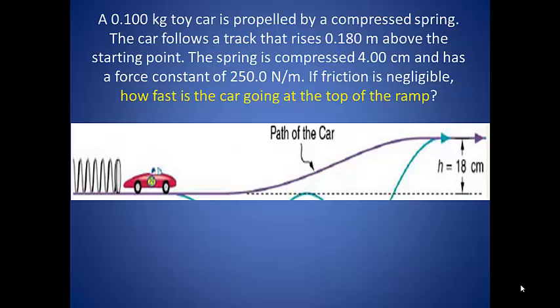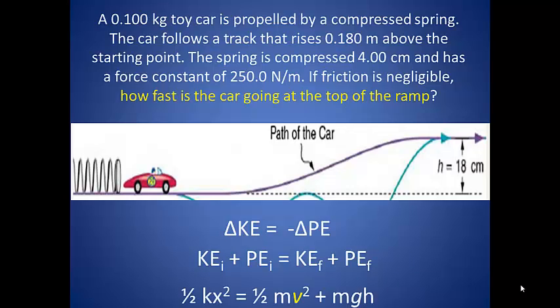But what if we want to know the velocity at the top of the ramp? The change in kinetic energy is still equal to the negative change in potential energy. Since we are looking for befores and afters of each type of energy, we can use the long version of our conservation equation. Our initial kinetic energy is zero, so we can ignore the term for the initial kinetic energy. The initial potential energy is that of the spring when it is compressed. And the final kinetic energy is to determine when the kinetic energy equation that includes velocity, since that is what we are trying to find. And the final potential energy is the gravitational potential energy because of the car's vertical movement.